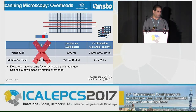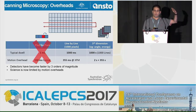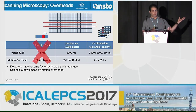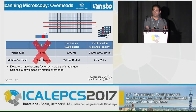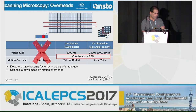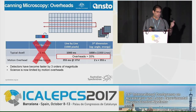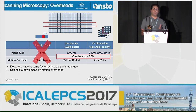In XFM, they've been using fly scanning since the beginning, what we call line-by-line scanning, because we need to scan the whole image. This consists of a fly scan over a line, then the sample stage stops, positions to the next line, starts and accelerates to the required velocity, and scans the next line. This is basically the second dimension of the scanning.